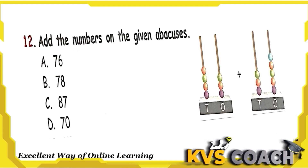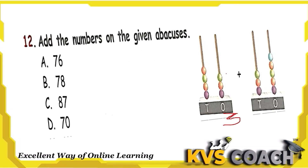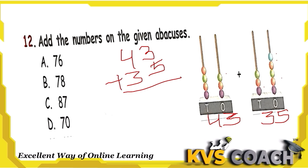The next question: add the numbers on the given abacus. The first abacus shows 3 ones and 4 tens — that is 43. The second abacus shows 5 ones and 3 tens — that is 35. Adding 43 plus 35: 5 plus 3 is 8, and 4 plus 3 is 7. So the number is 78. Option B is the right answer.